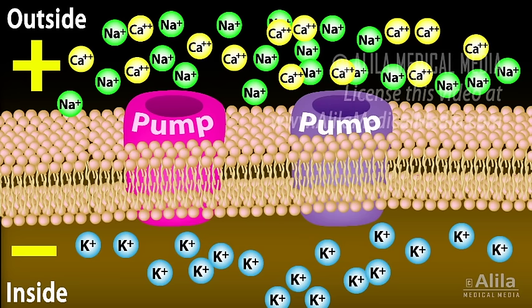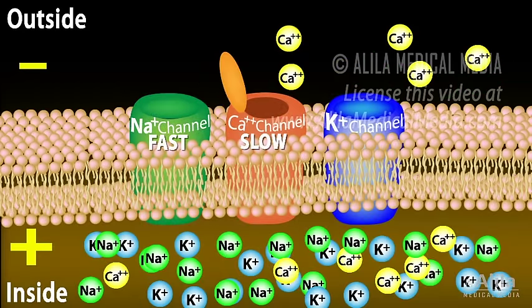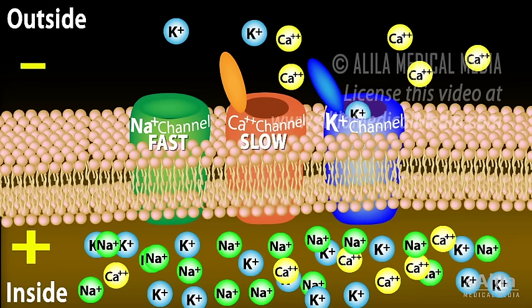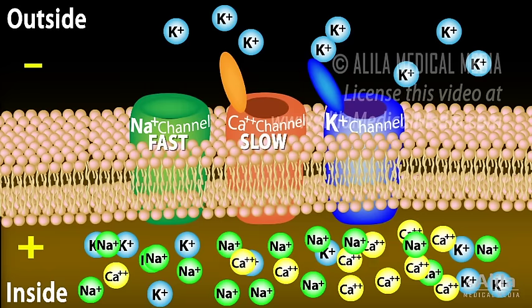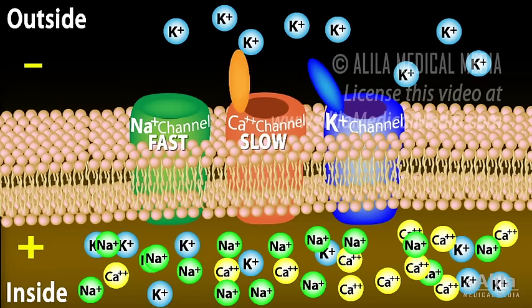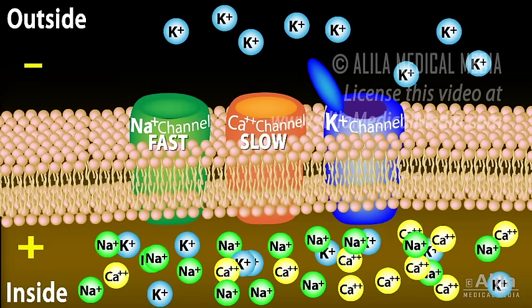These gradients are maintained by several pumps that bring sodium and calcium out and potassium in. An action potential is essentially a brief reversal of electric polarity of the cell membrane and is produced by voltage-gated ion channels. These channels are passageways for ions in and out of the cell, and are regulated by membrane voltage.